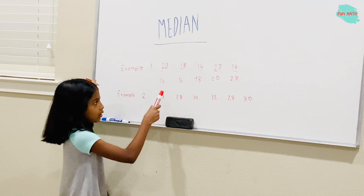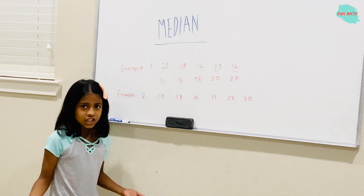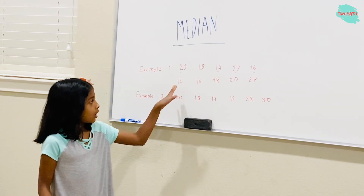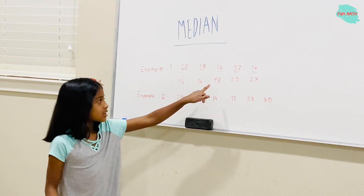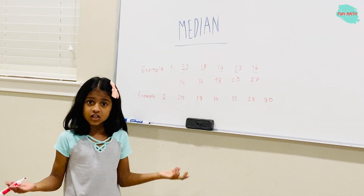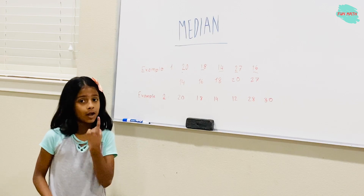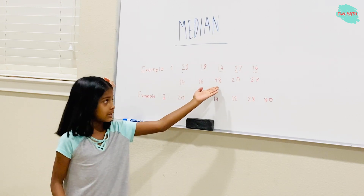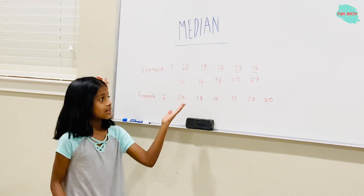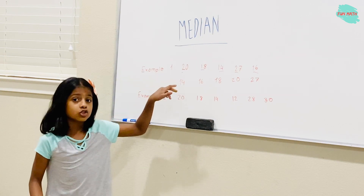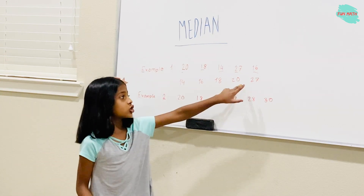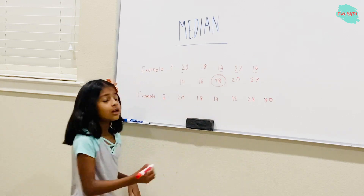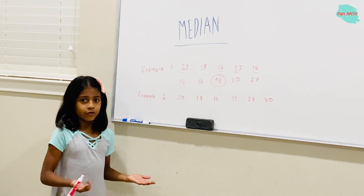Now you're going to count: 1, 2, 3, 4, 5. As you see, there are 5 numbers. You will find the number that's in the very middle. Since there's an odd number, it would be 1 median. The median is 18 because there are two smaller numbers and two bigger numbers. So for the first example, 18 is the median.